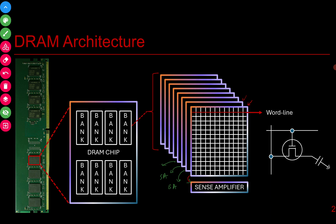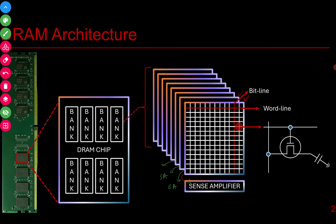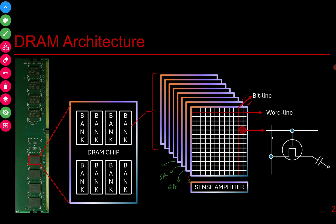The horizontal lines inside each block are called word lines and the vertical lines are called bit lines. The bit line is so named because it transfers a single bit of data. Now let's understand how a single bit is stored. Each intersection of row and column represents a single bit, and each bit is stored using a structure consisting of a transistor and a capacitor.